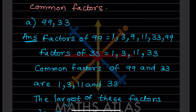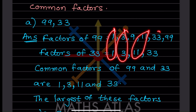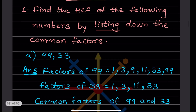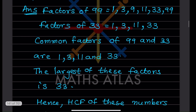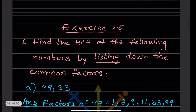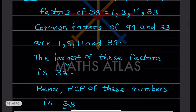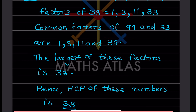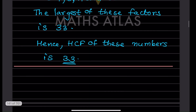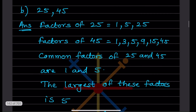The common factors of 99 and 33 are 1, 3, 11, and 33. We have to find the HCF, so we take the highest common factor. The question says: find the HCF of the following numbers by listing down the common factors. From the common factors, the highest one is 33. So the HCF of 99 and 33 is 33.